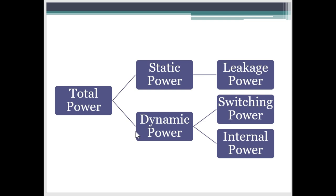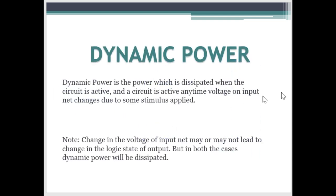Dynamic power can be classified in two types, switching power and internal power. Let's look at switching power first. When the voltage at input net is changing, it may or may not lead to the change in logic state of output. Let's consider the case that when the change in input is also leading to the change in output. That's when the switching power comes into the picture.